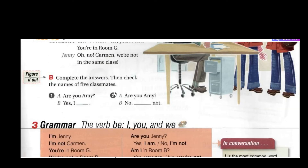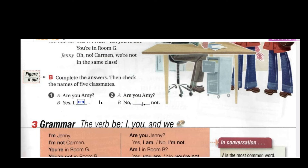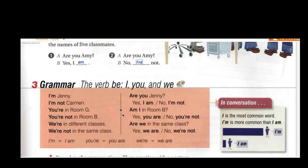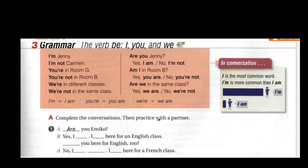Now let's complete the answers, then check the names of five classmates. Number one: 'Are you Amy?' — 'Yes, I am.' Number two: 'Are you Amy?' — 'No, I'm not.' So this is the grammar you've already seen. Now you have to complete the conversation and then practice with a partner.